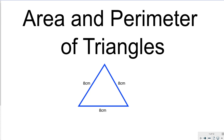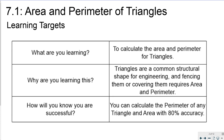Hi guys and welcome to the video on the area and perimeter of triangles. In this video we're going to go over the formulas for calculating area and perimeter of triangles and then do a couple of examples. Triangles are a common structural shape for engineering, and fencing and covering them requires area and perimeter. You're going to calculate these with 80% accuracy, so 8 out of 10 times if you are doing this correctly.